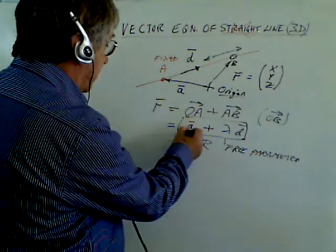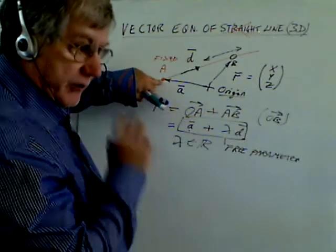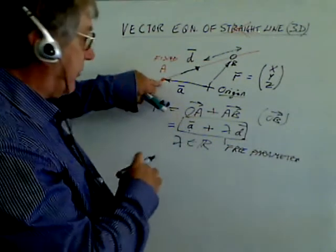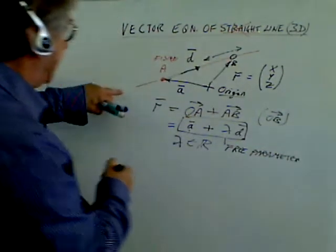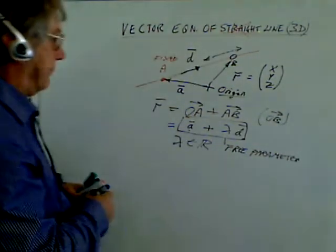That is fixed, doesn't move. That's that point in space, that's a fixed location. And this will then generate whatever B is along the line.